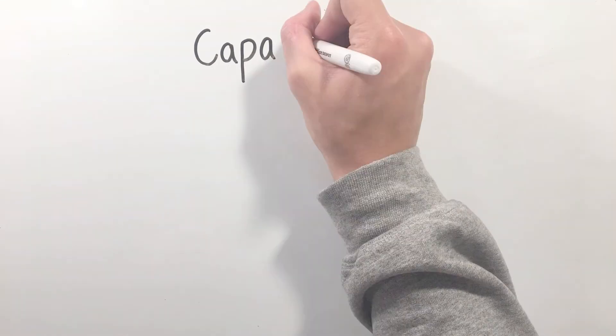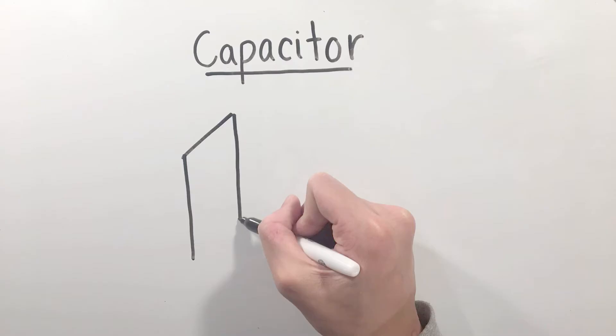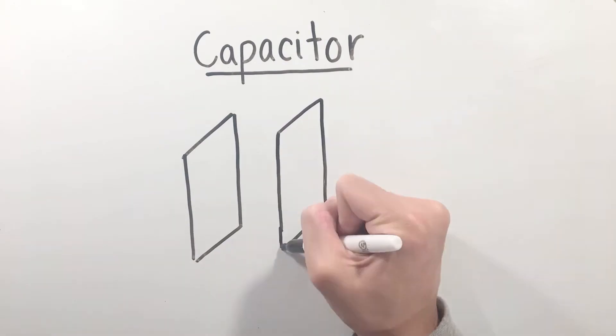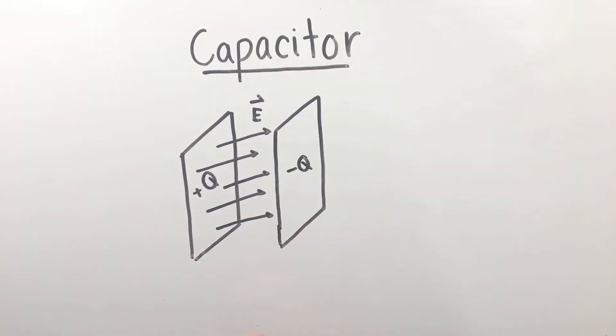The basic idea of a capacitor is a circuit element that stores energy within an electric field. In general, capacitors do this by having two plates that have opposite charges. These opposite charges create a uniform electric field, which then stores energy in a potential difference it creates across the plates.